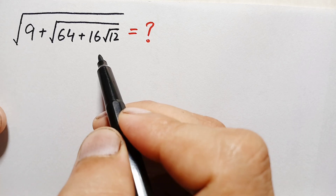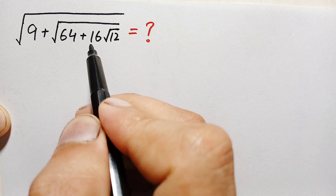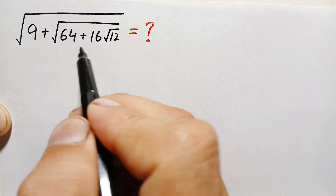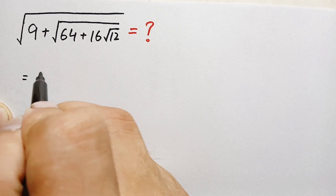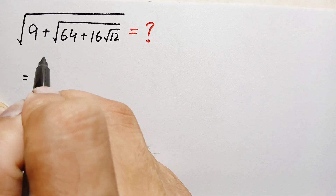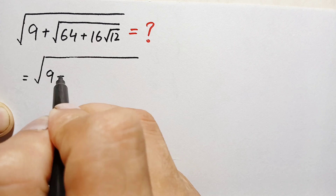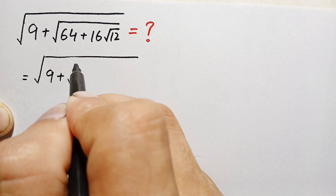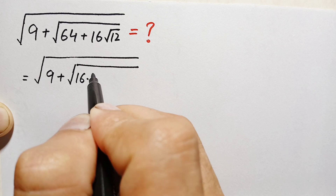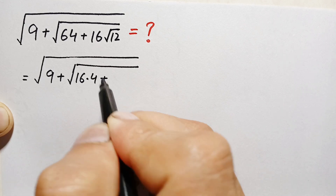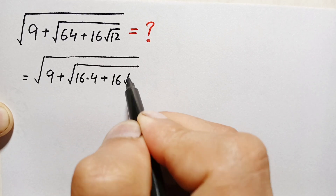Now how can we solve this math problem? First of all, we can write 64 as the product of 16 times 4, so 64 equals 16 times 4. Therefore this becomes the whole square root of 9 plus square root of 16 times 4, plus 16 times square root of 12.